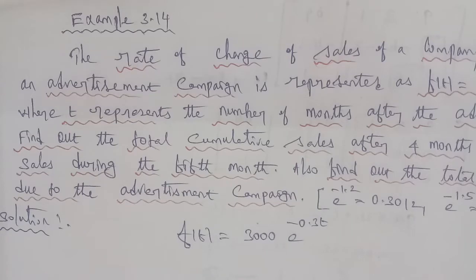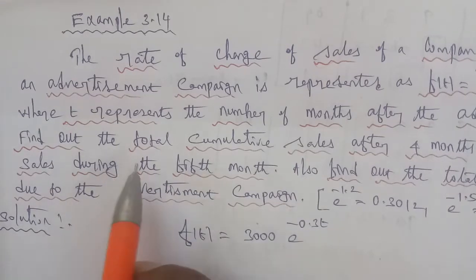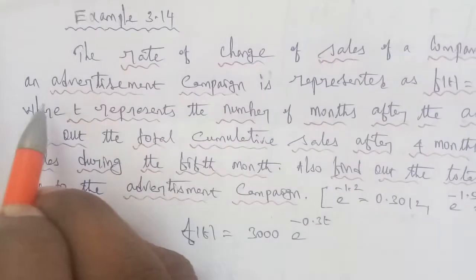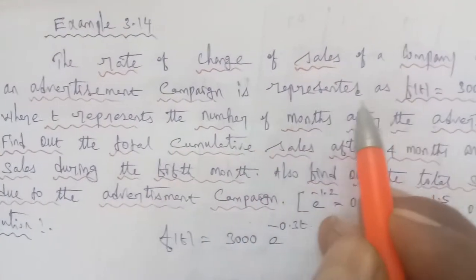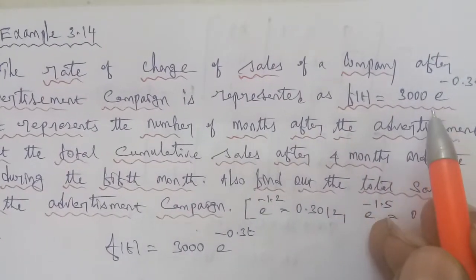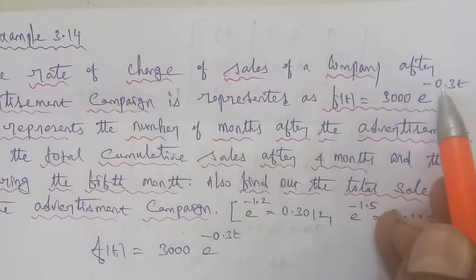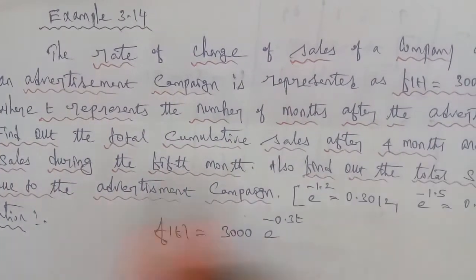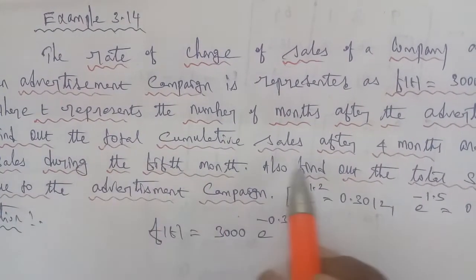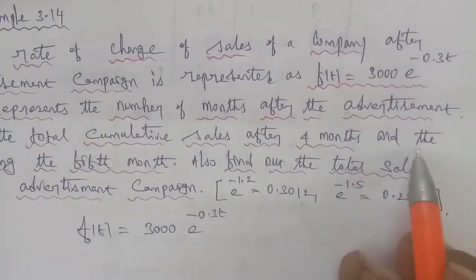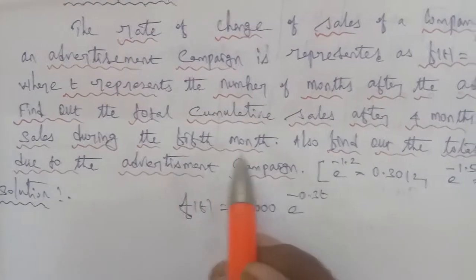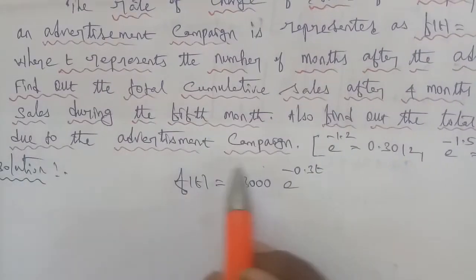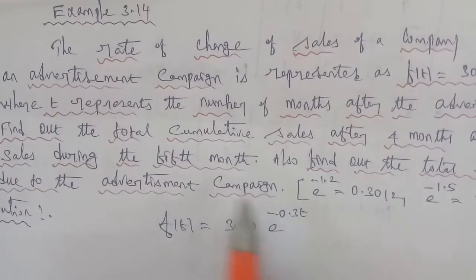Hi students, 12th Business Maths Example 3.14. The rate of change of the sales of the company after an advertisement campaign is represented as f(t) = 3000 e^(-0.3t), where t represents the number of months after the advertisement. Find the total cumulative sales after four months, the sales during the fifth month, and the total sales due to the advertisement campaign.